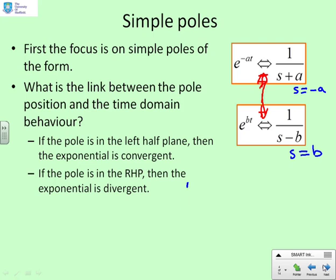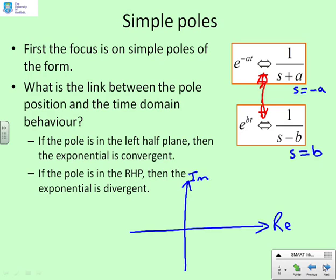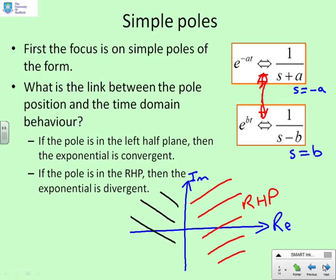Just for completeness, we'll clarify what we mean by left half plane and right half plane. On an Argand diagram with a real axis and an imaginary axis, everything to the right of the imaginary axis is the right half plane, and everything to the left of the imaginary axis is the left half plane.